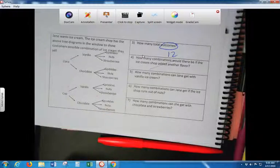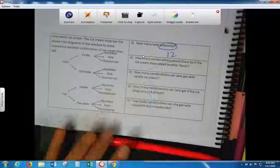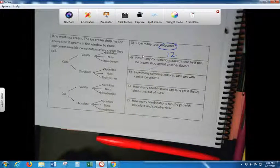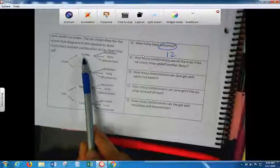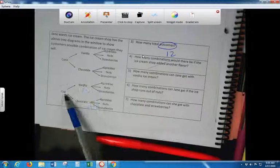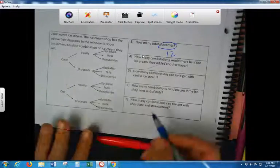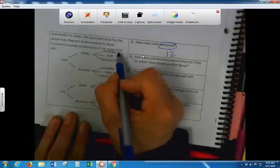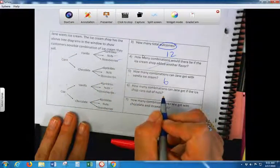How many combinations can Jane get with vanilla ice cream? So, vanilla with sprinkles, vanilla with nut, vanilla with strawberry all in a cone, or vanilla in a cup with sprinkles, nuts, or strawberries. So, this would be one, two, three, four, five, six. It would be six. Do you guys see that? One, two, three, four, five, six.